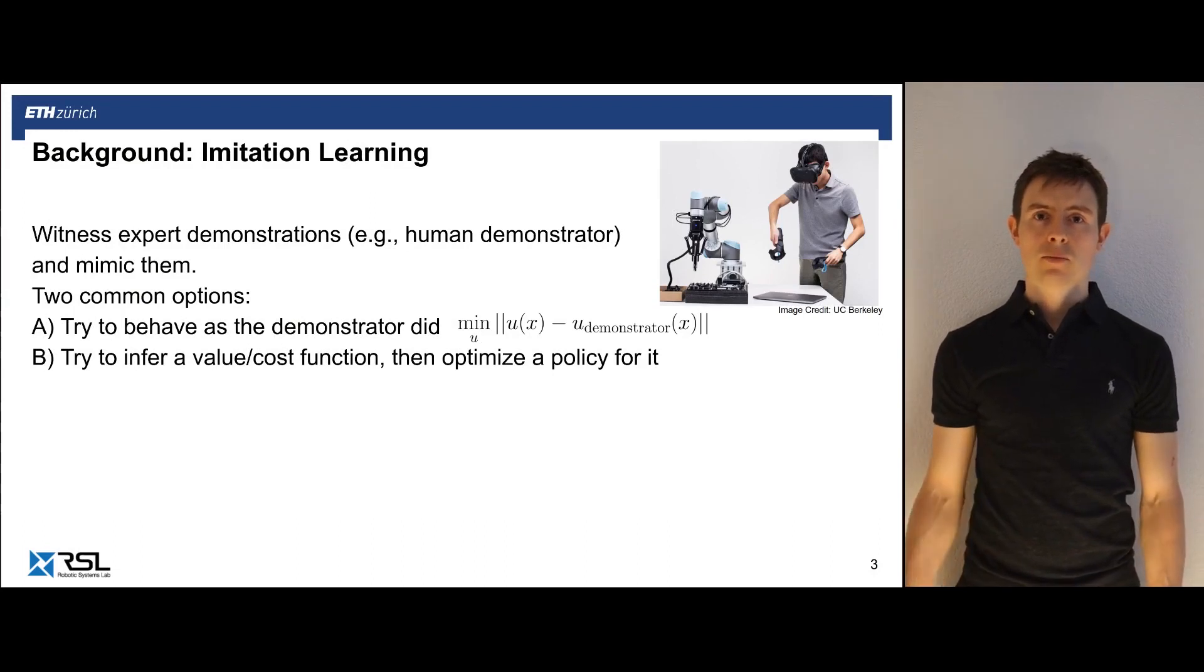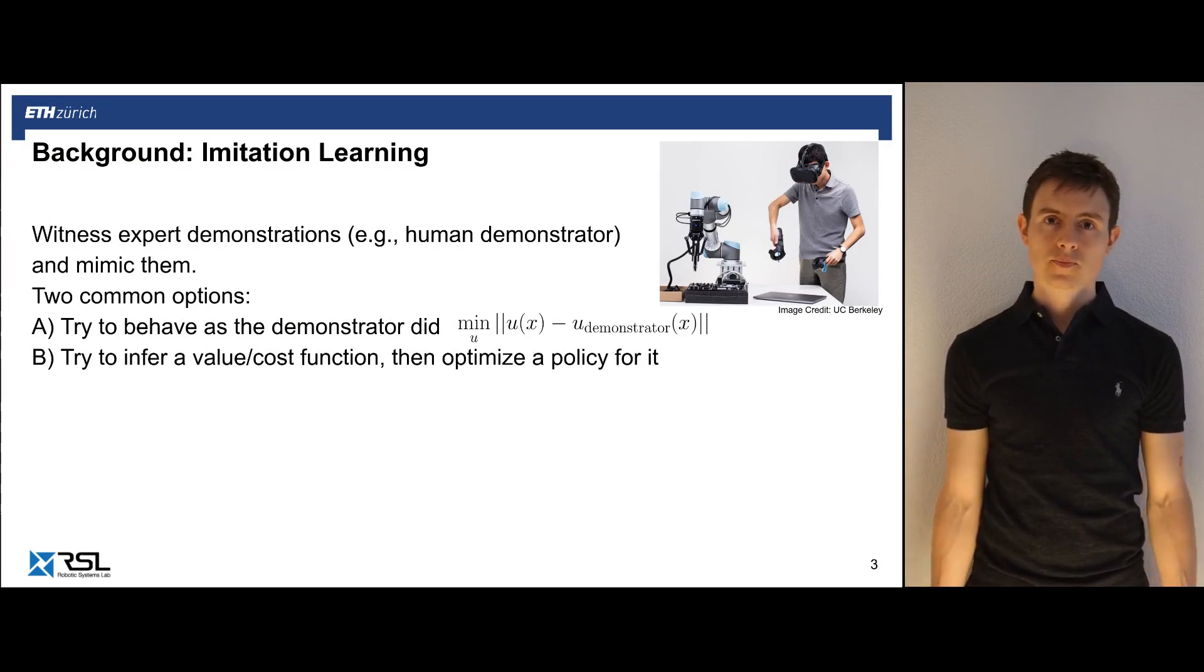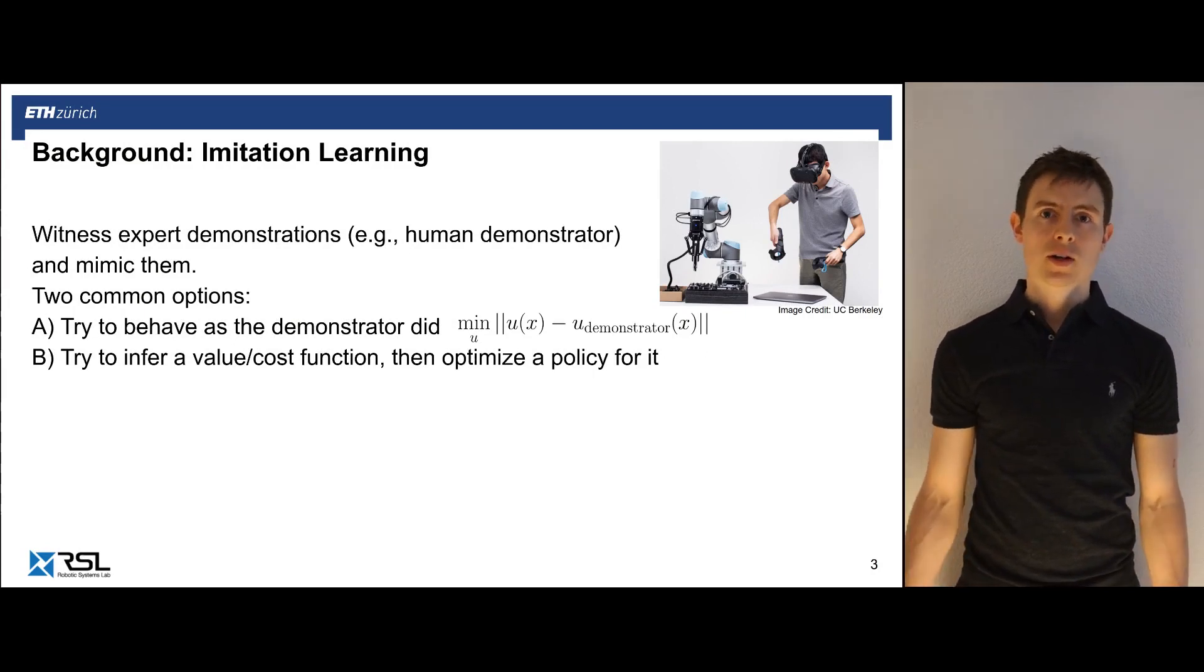Let's take a look at imitation learning. Imitation learning works by providing the learning system with a set of samples, for example a human demonstrator, and the system will try to imitate or copy the behavior of the expert's demonstrations. There are two ways how to do this. One, imitate the actions of the expert as close as possible, so try to minimize the distance between the actions of the learner and the actions of the demonstrator. On the other hand, there is also the stream of work of inverse reinforcement learning or inverse optimal control, which try to first infer a value or cost function and then optimize this learned cost function.